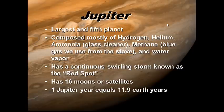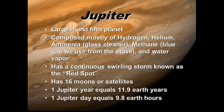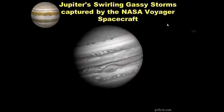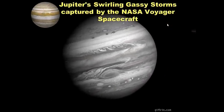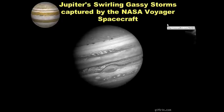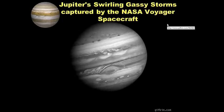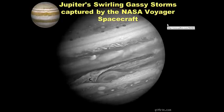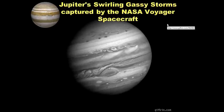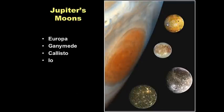A Jupiter day — the time it takes to spin on its axis — is about 9.8 Earth hours, so it spins very, very fast. This is Jupiter's swirling gassy storms captured by the NASA Voyager spacecraft as it zoomed by many years ago. It has four major moons: Io, Ganymede, Europa, and Callisto.